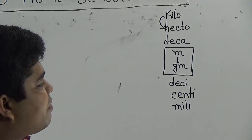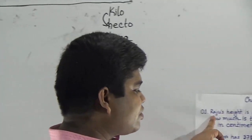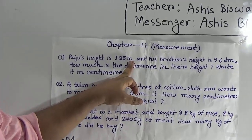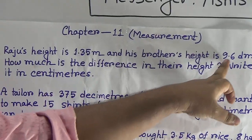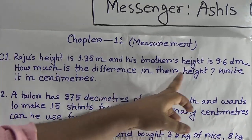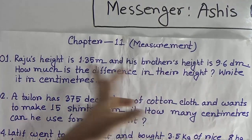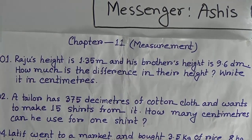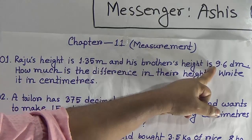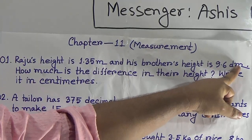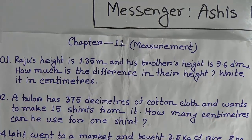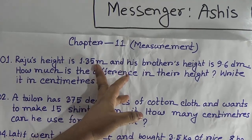Please go to our first question. Raju's height is 1.35 meters and his brother's height is 9.6 decimeters. How much is the difference in their height? Write it in centimeters. Please notice — the units are different, so we cannot subtract one from another.